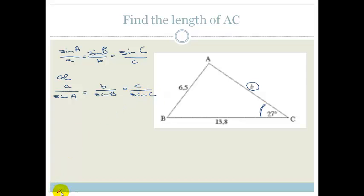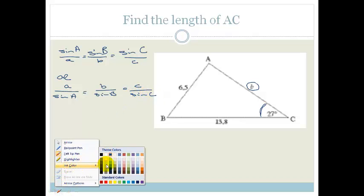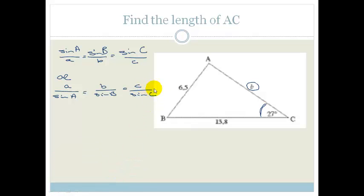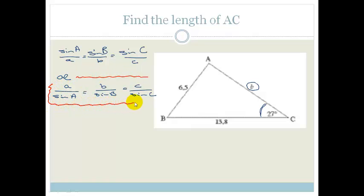In this example we want the length of a side. Because we want the length of a side, I would suggest we use the second set of equations — the bottom lot — because then you have the thing you're solving for at the top already. It's no big deal if you use the top one; it's just easier to solve if you use the bottom one.